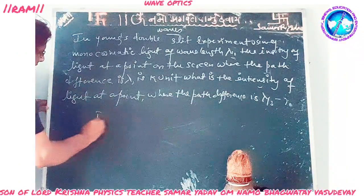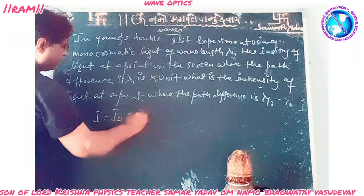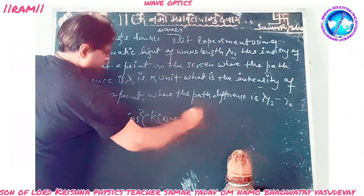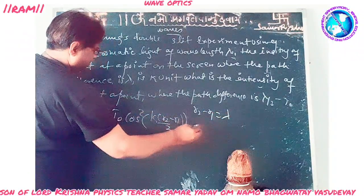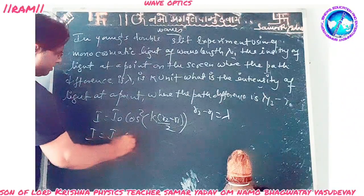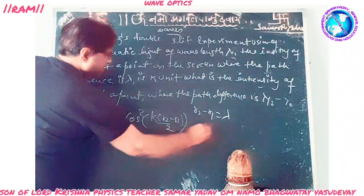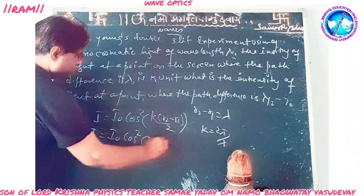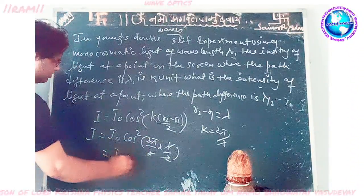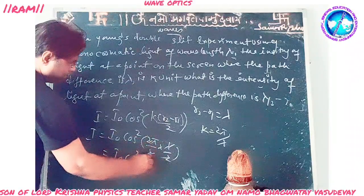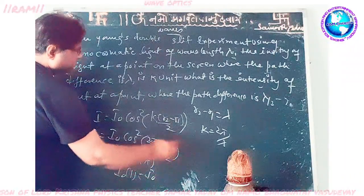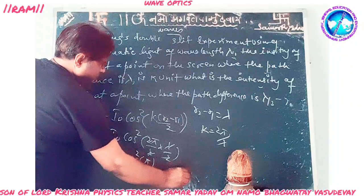We know that intensity i is equal to i0 into cos squared of k times (r2 minus r1) upon 2. For the first point, r2 minus r1 is lambda, and k is equal to 2pi by lambda. So we get i0 into cos squared of (2pi/lambda into lambda/2), which gives i0 into cos squared pi. Since cos squared pi equals 1, we get i0 equals K. This is equation number 1.